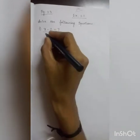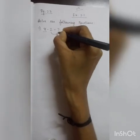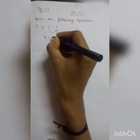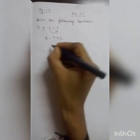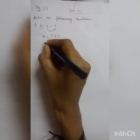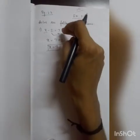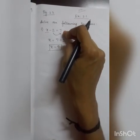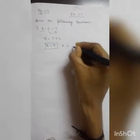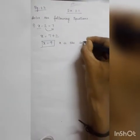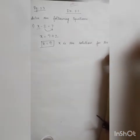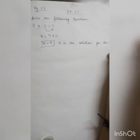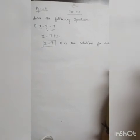We want x alone. So I am bringing the 2 to that side — 2 goes to the other side, and it becomes plus 2. So x is equal to 7 plus 2, which is 9. So x equals 9 is the solution for this equation.